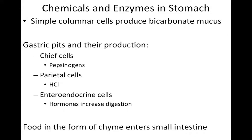Inside the stomach you have simple columnar cells whose job is to secrete. They do a little bit of absorption but not much, and they secrete many different enzymes and chemicals as well as a bicarbonate mucus solution so that the stomach acid does not burn through the stomach wall. We also have chief cells, parietal cells, and enteroendocrine cells. Enteroendocrine cells work with your endocrine system, releasing hormones to speed up digestion. Chief cells produce pepsinogen and parietal cells produce hydrochloric acid. Together, pepsinogen and hydrochloric acid work to produce something called pepsin.